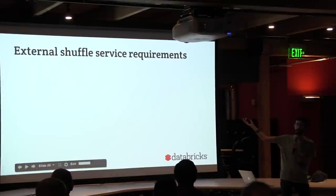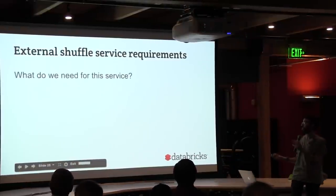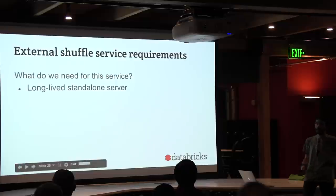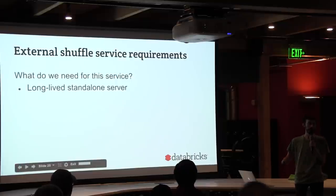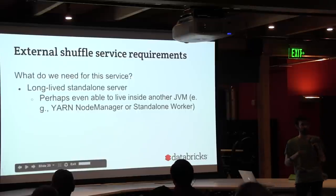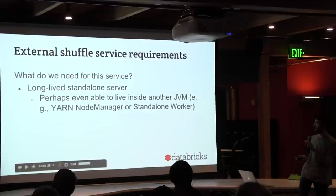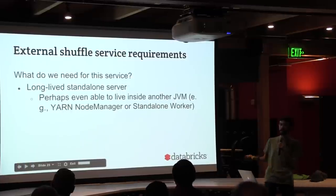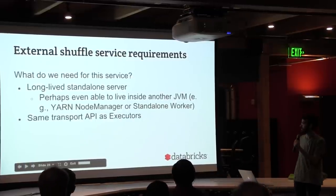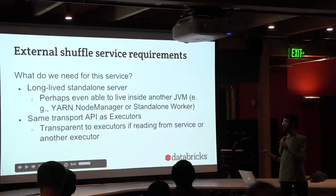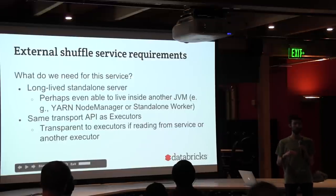What we're introducing is an external shuffle service — a long-lived standalone server. This process needs to be more long-lived than a single executor, potentially even more long-lived than any given Spark context or Spark version. We'd like to have the service live potentially inside another JVM to make it easier to deploy — for instance, into the YARN node manager or into the standalone worker, both of which already live on every node.